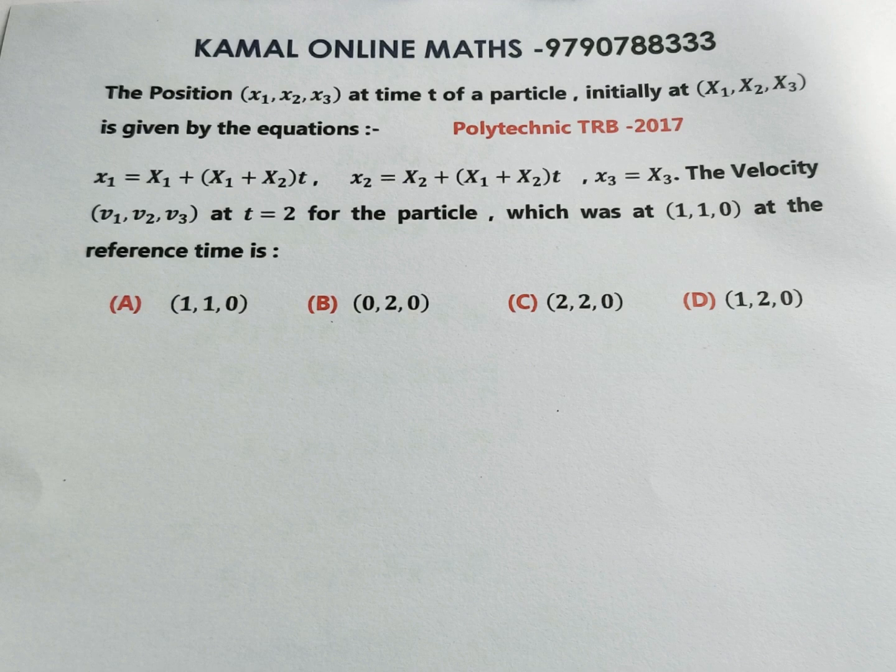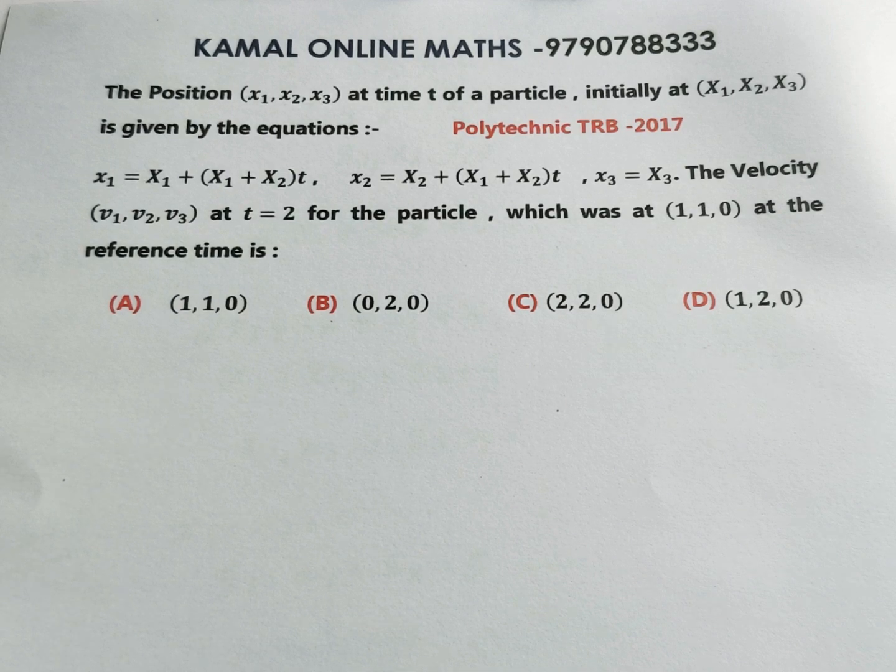Question: The position (x1, x2, x3) at time t of a particle initially at (X1, X2, X3) is given by the equations x1 = X1 + (X1 + X2)t, x2 = X2 + (X1 + X2)t, and x3 = X3. The velocity (v1, v2, v3) at time t = 2 for the particle which was at (1,1,0) at the reference time is: